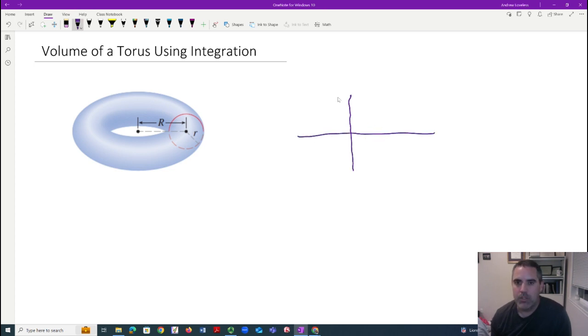In general, we have this technique to find the volume of something that starts with a region in 2D, and that applies to lots of things. For example, if you take this half circle and rotate it around the y-axis, that's a sphere. You can use calculus to find the volume, and you'll get 4/3 π r³.